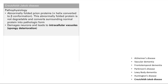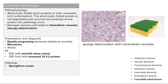Finally, Creutzfeldt-Jakob disease is a nasty prion disease where prions become abnormally folded into a beta conformation. This abnormally folded protein is not degradable, so it stays there permanently, and it also converts surrounding proteins into the pathological form — infecting and messing up your whole brain. The abnormally folded prions damage neurons, causing intracellular vacuoles that lead to spongiform degeneration. The presentation is rapidly progressing dementia — weeks to months, as opposed to Alzheimer's which takes years. The other key is myoclonus — sudden jerks — along with rapidly progressing dementia.